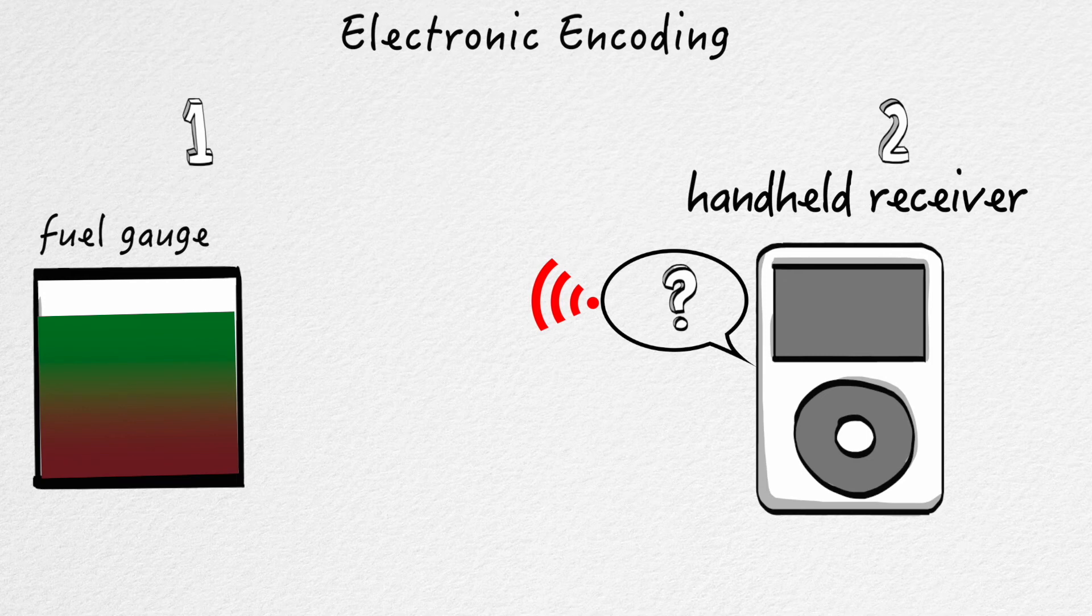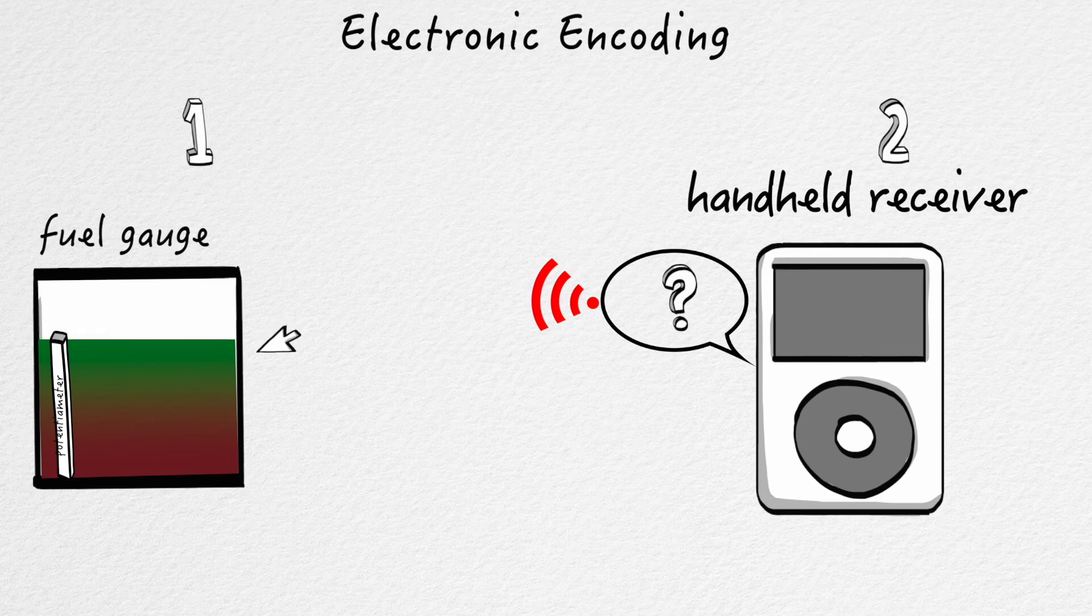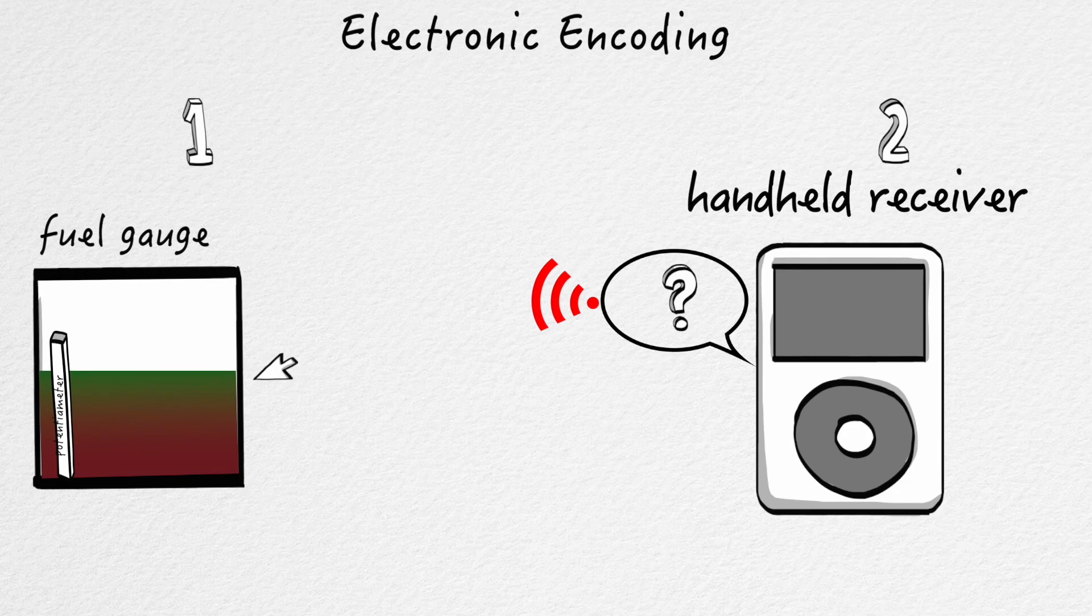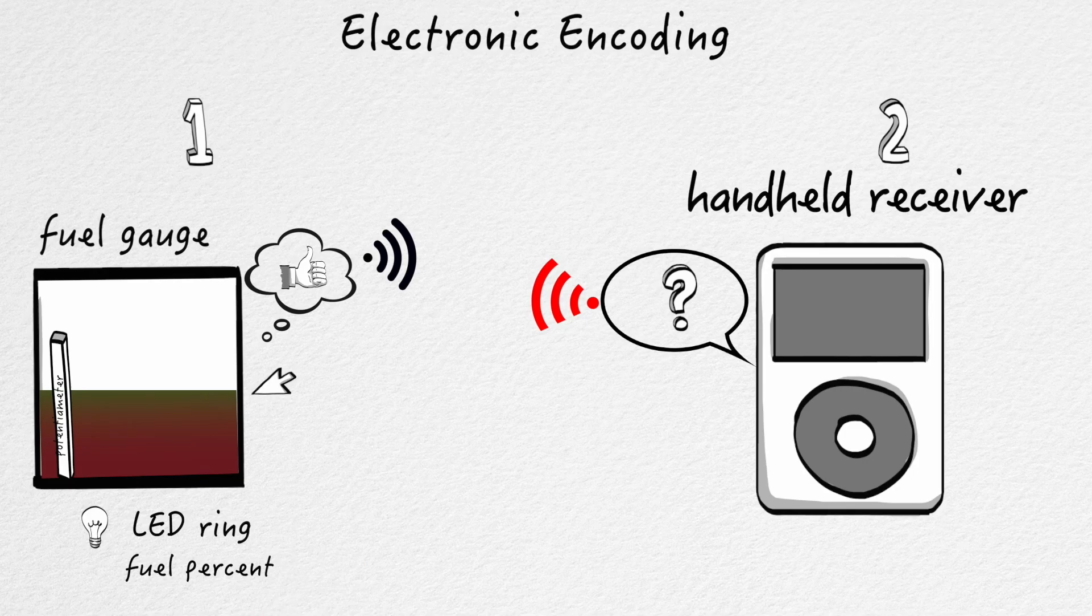Essentially what this system does is it measures the fuel level. We used a potentiometer on an arm that essentially would turn as the fuel gauge drops. And that would do two things. It would light up an LED ring which has 12 segments. And it also would convert it into a fuel percent to be sent to the handheld receiver.